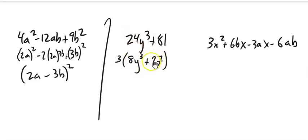And now I notice I've got these two things added together. These aren't squares, but these are cubes. In other words, this is (2y)^3 and this is 3^3. So this is the sum of cubes, so I know how to factor that.